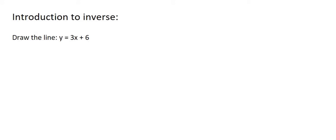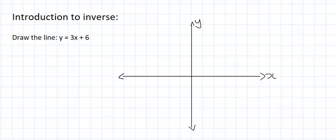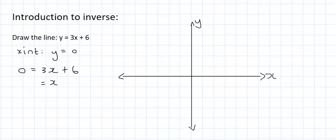Can you still remember how to draw a straight line? You need two things: your x-intercept and your y-intercept. To find the x-intercept, you make y equal to 0 and you solve for x. If you do the maths, you end up with x equaling minus 2. So when y is 0, x is minus 2 — we can plot that on the diagram: x is minus 2 and y is 0.